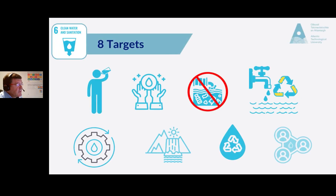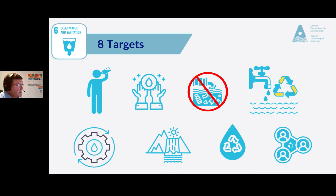Overall, billions of people do not have access to clean water, and water pollution worldwide is endangering our survival. Everything relies on water — it is an absolutely essential resource. We must work collectively and internationally to address the challenges outlined in Goal 6.